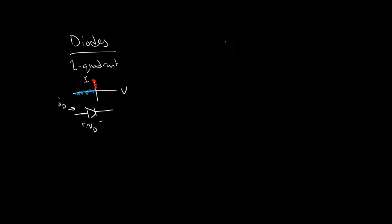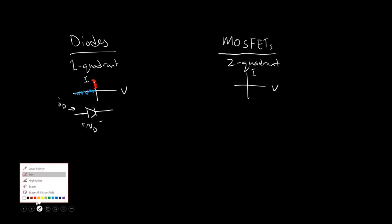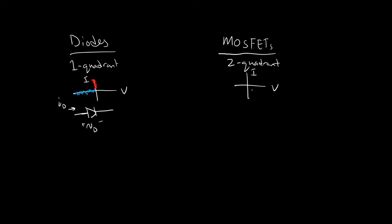So we have diodes, and then we also have MOSFETs. We really only described two devices: the MOSFET and the diode — the two-quadrant and the one-quadrant. The IV characteristic of MOSFETs: they are able to block positive voltage.